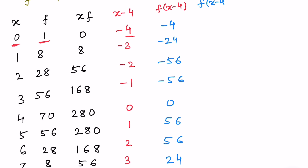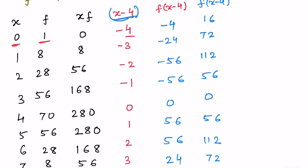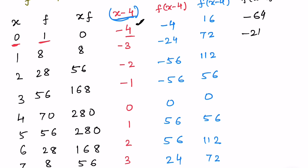Continuing the f·(x−4)² column: 16, 112, 56, 0 and the symmetric terms. For the third moment we need f·(x−4)³: values are −64, −216, −224, −56, 0, 56, 224, 216, 64. For the fourth moment, f·(x−4)⁴: 256, 648, 448, 56, 0, 56, 448, 648, 256.